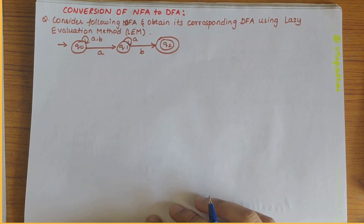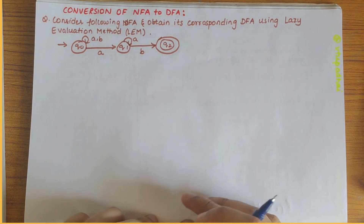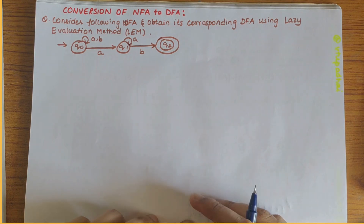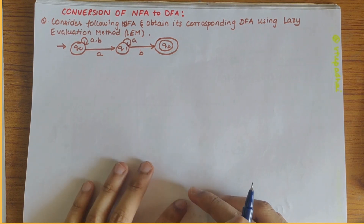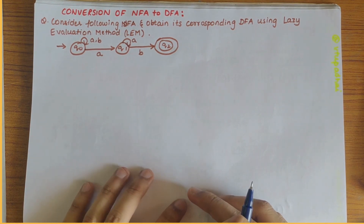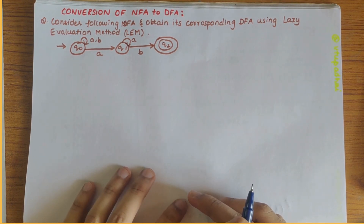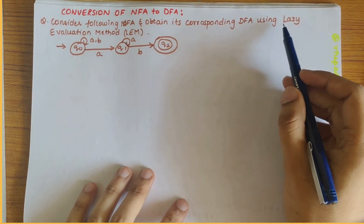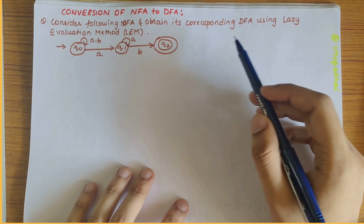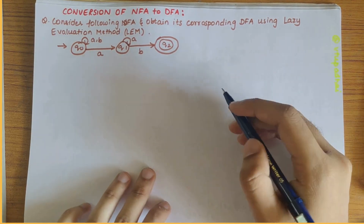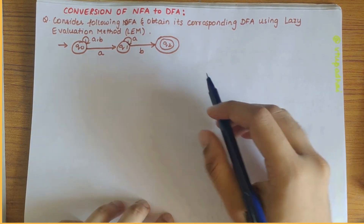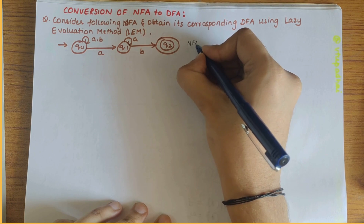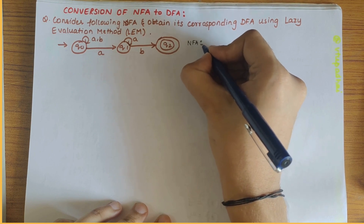In this video we'll be looking into conversion of NFA to DFA. Previously we have done the subset construction method; in this video we'll be looking into the lazy evaluation method.